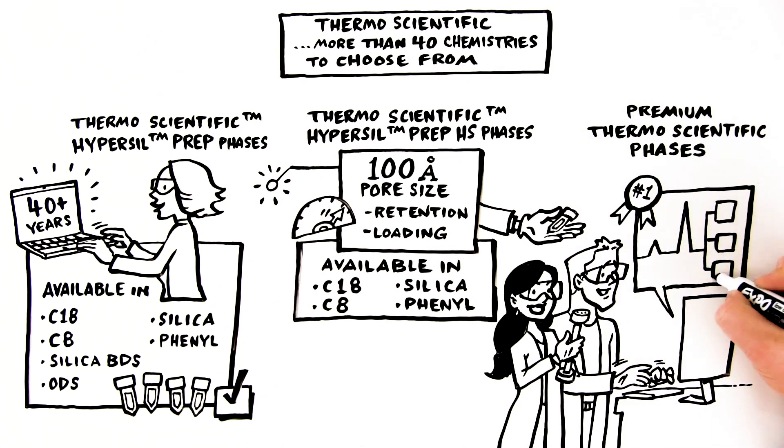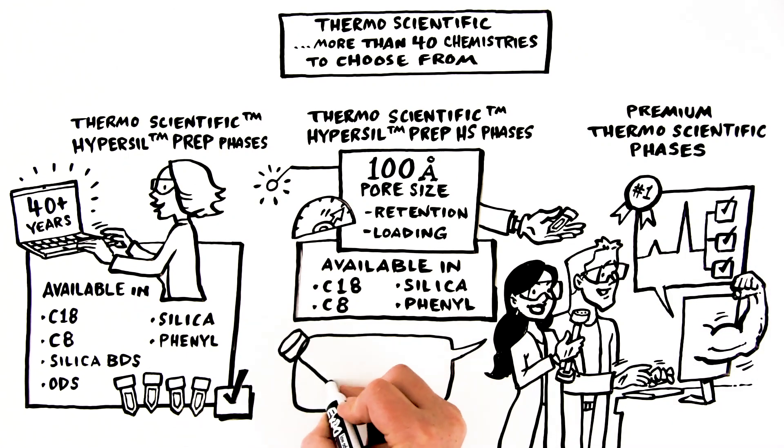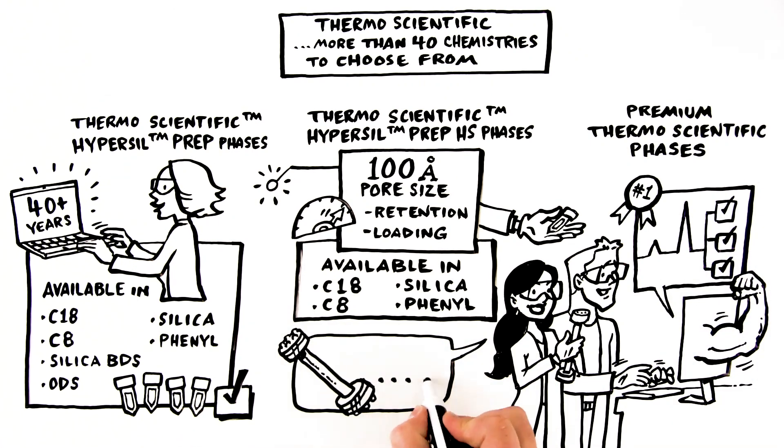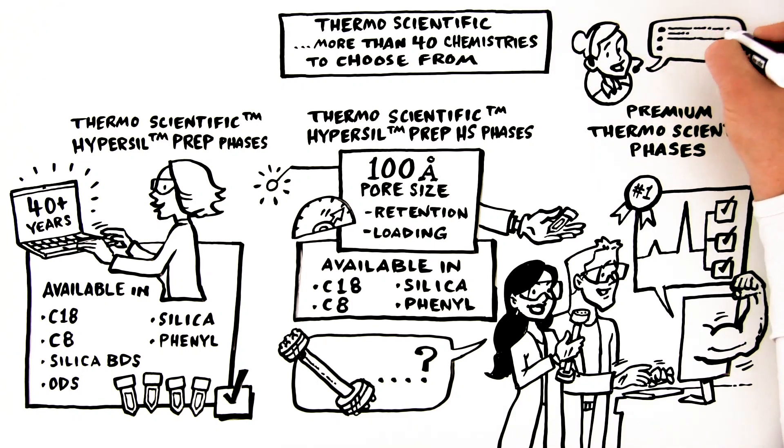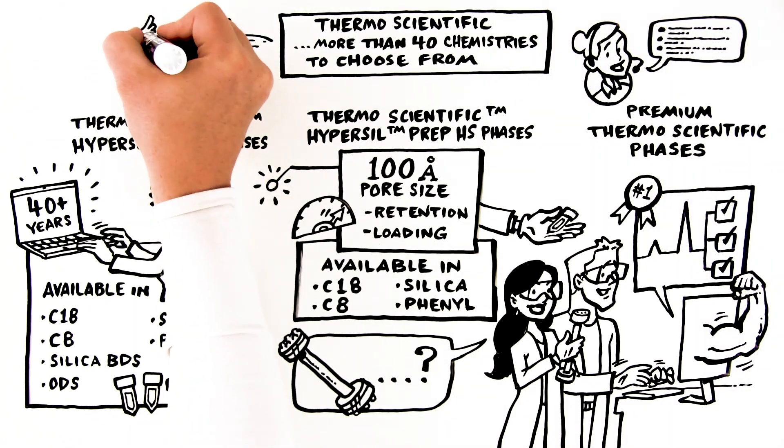Our unique chemistries can meet the most challenging separations. If you don't see the column you need, getting it is simple. Contact your local sales rep for options and to have a custom-built column shipped quickly.